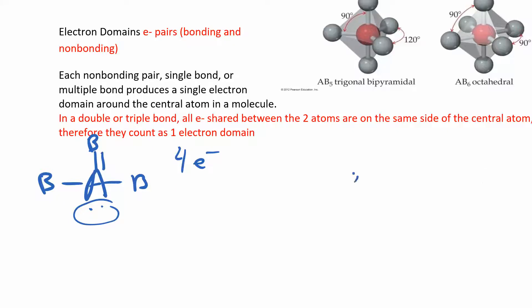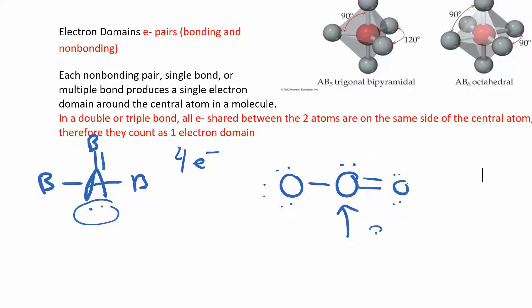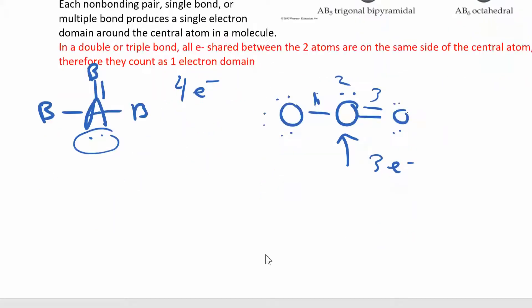For a more complex example, focus only on the central atom — even if there are many electrons elsewhere. If the central atom has a single bond, a single bond, and a double bond, that's three electron domains. Remember: any single bond, any multiple bond, or any lone pair each count as one electron domain. We're going to draw the Lewis structure, figure out how many electron domains there are, and since electrons repel, they'll try to get as far away as possible.